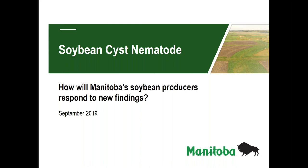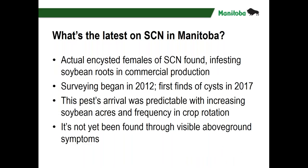These recent finds that you may have heard about are the work of Mario Tenuta and his team from the University of Manitoba, funded and supported by us and by the Manitoba Pulse and Soybean Growers. I've called my presentation this morning: 'How will Manitoba's soybean producers respond to new findings?' The abbreviation we use is SCN — soybean cyst nematode.